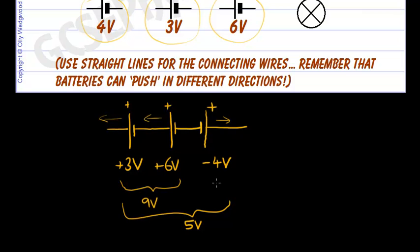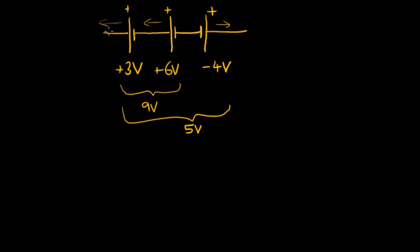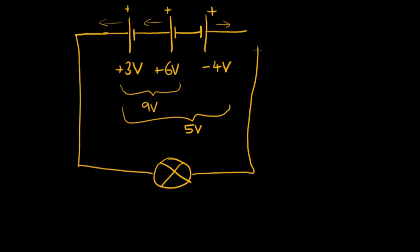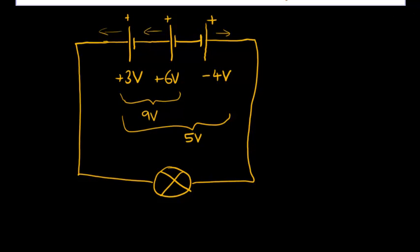So that's minus 4 volts there. Then we would just continue this circuit in a series loop and put in our bulb and back again to the batteries. So that's how you can combine cells to create batteries with different voltages.